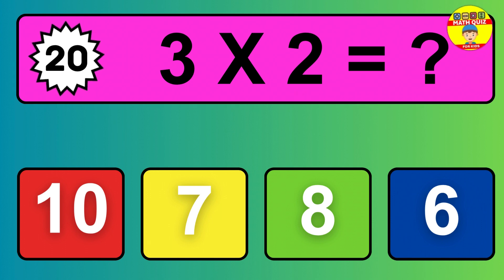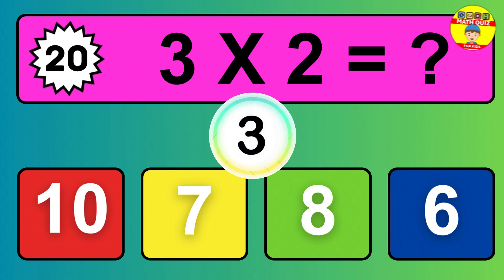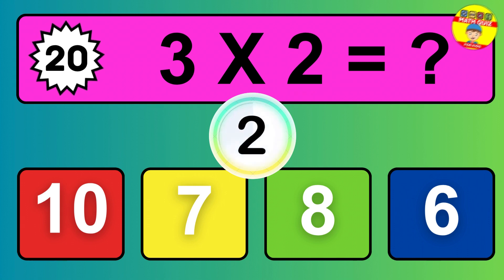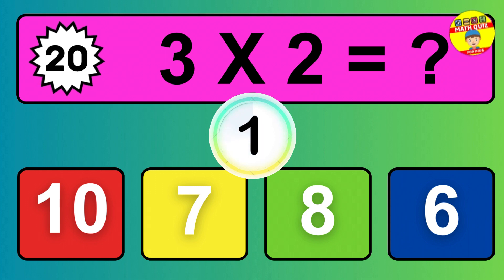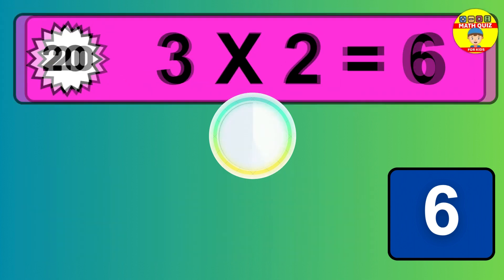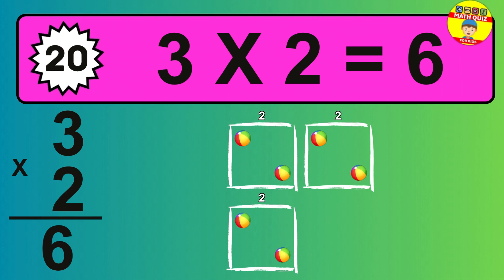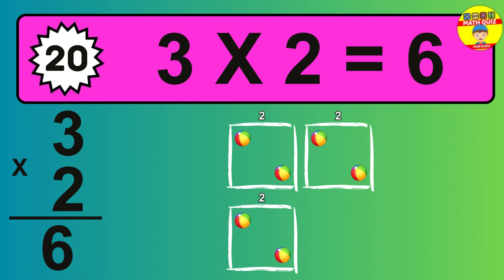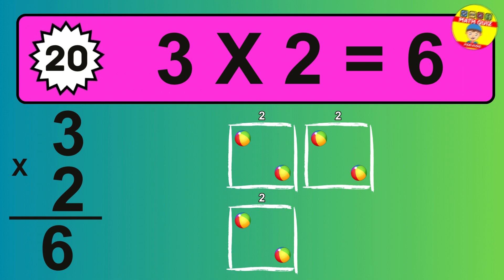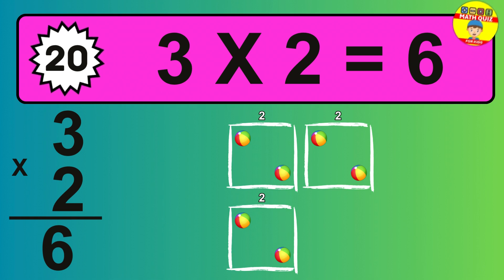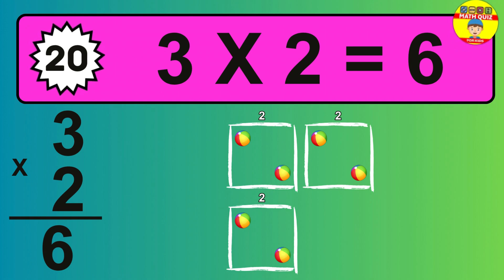Question 20. 3 times 2 equals what? The answer is 3 times 2 is 6. To calculate, we have 3 groups with 2 balls each one. So how many balls do we have? 6 balls.